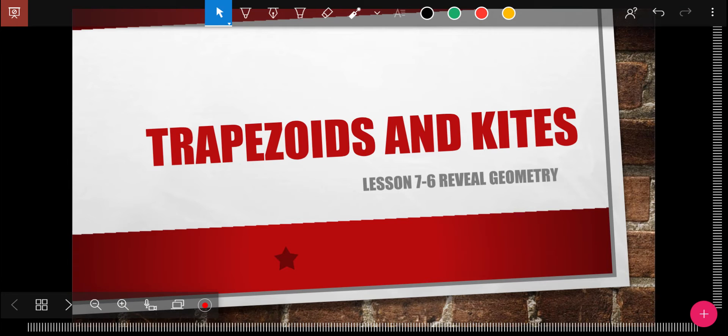Today's lesson is on two new quadrilaterals for us: trapezoids and kites. It's from Module 7, Lesson 6 in our Revealed Geometry book.